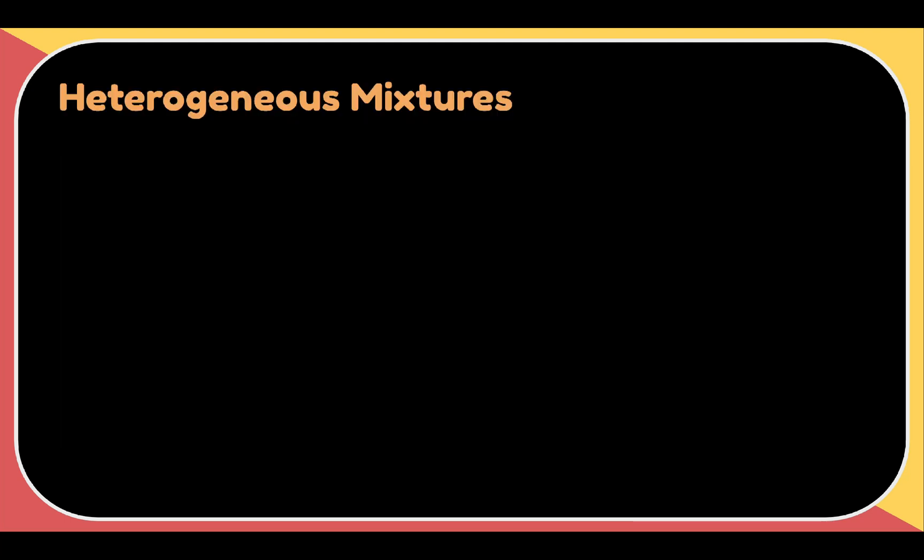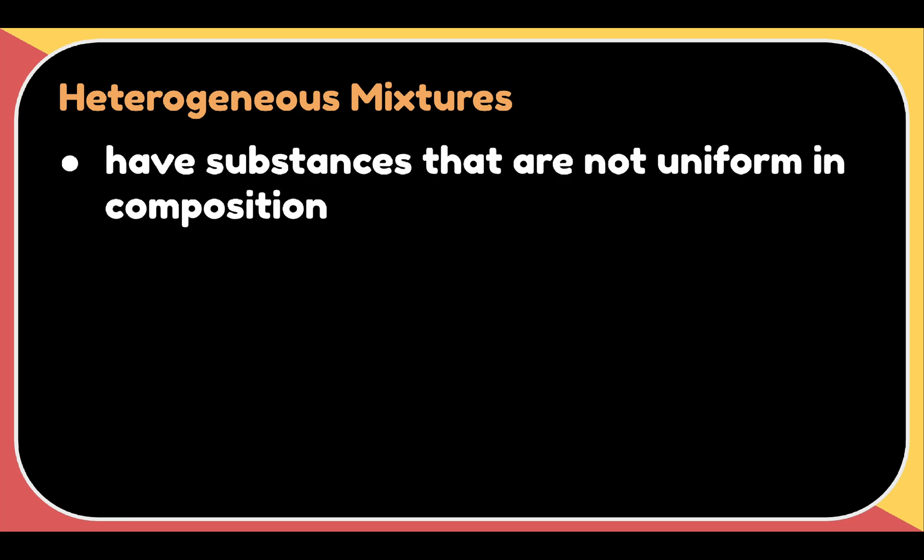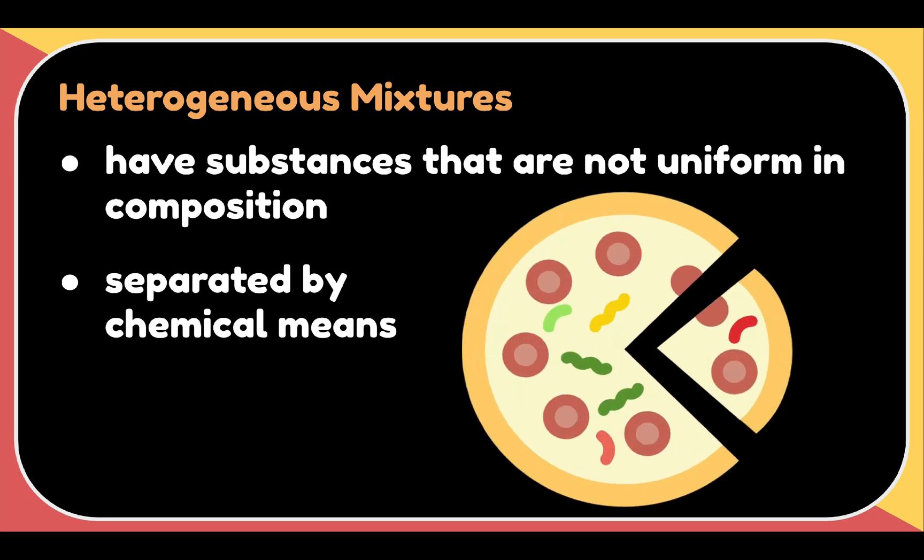Now there are two types of mixtures. First is the heterogeneous mixture. Heterogeneous mixtures contain substances that are not uniform in composition. The parts in the mixture can be separated by physical means. For example, pizza. Pizza is a heterogeneous mixture because every bite contains something different. Also, you can actually separate the ingredients. If you don't like the olive, you can remove it. If you don't like the ham or bacon, you can remove them.